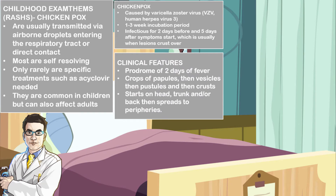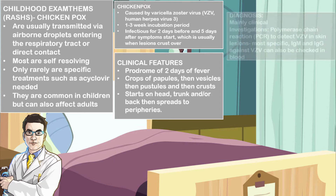Clinical features include a prodrome of 2 days of fever. There may be crops of papules, which then eventually become vesicles, then eventually become pustules, and then eventually crust over. It may start off from the head, the trunk, and the back, and usually spreads to the periphery.